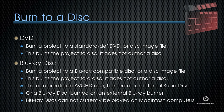However, this burns the project to the disk — it puts the movie on the disk. It doesn't author a disk adding menus and buttons, except in a template form. When we create a Blu-ray disk, we are also burning a project to a Blu-ray-compatible disk or creating a disk image file, but it doesn't author a Blu-ray title. There are two kinds of Blu-ray disks: an AVCHD disk, burned on an internal SuperDrive, or a Blu-ray disk, burned on an external Blu-ray burner.